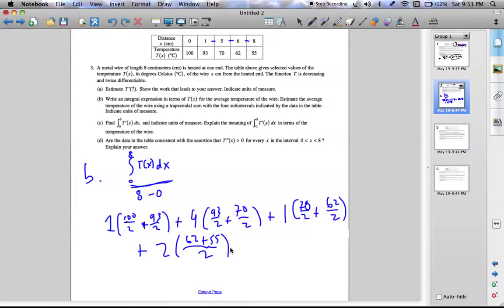You can still use your calculator for this. So if you do, you get, for this, 605.5. But since we need to divide by 8, this is just an approximation for this integral, this trapezoid sum.